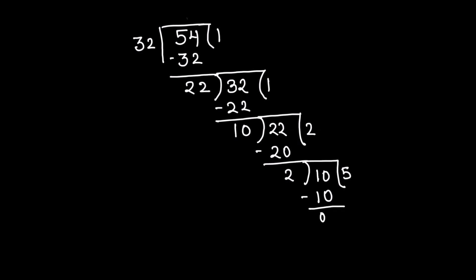We get the remainder as 0. The divisor by which we got the remainder as 0 will be the HCF of the three numbers. So HCF comes out to be 2. We have used 32 and 54 to find the HCF so far.